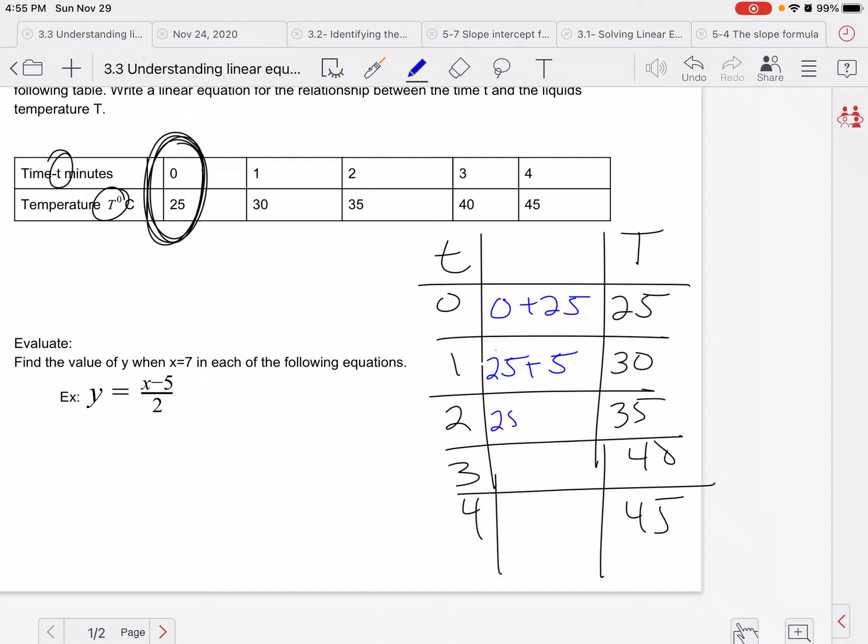Well, then to get to 30 from 25, I'd have to add two fives, right? And to get to 40, I'd have to add three fives. And then we'll have to add four fives to get from 25 to 45, right? Now if you notice here, here I added one five, here I added two fives, here I added three fives, and four I added four fives. How convenient.